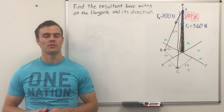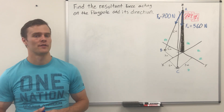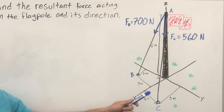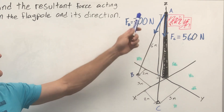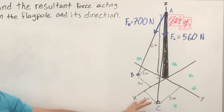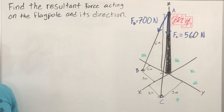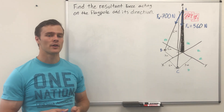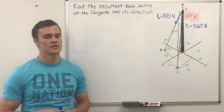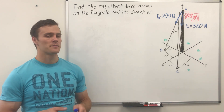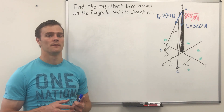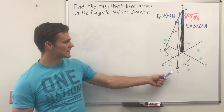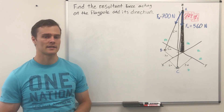Here we have an example problem where we can use what we learned about position and force vectors to figure out the resultant force acting on this flagpole. We have a flagpole where the pole itself is going along the z-axis and the ground is in the xy-plane. We have two ropes coming off of it pulling with different forces. What we need to do first is find position vectors that represent these ropes, and from there we will find the force vector from the direction that those position vectors are going.